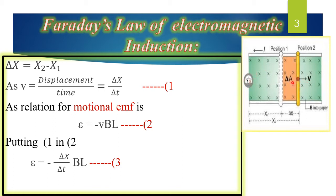Students, when we stop this conductor — that is, when we no longer move it — since the magnetic flux will not change, EMF will not be induced, and therefore no current will be induced either. Now, since the conductor is moving, in our previous topic we studied motional EMF — the EMF induced due to the motion of a conductor. The relation for motional EMF is: E is equal to minus VBL. Let us label this as equation number 2.